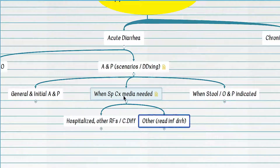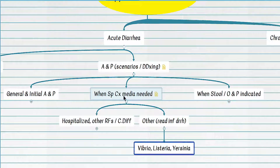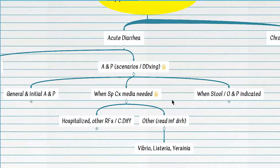Other conditions requiring special culture media include pathogens such as Vibrio, Listeria, and Yersinia — any diarrheal pathogen not included in routine stool culture. Routine stool culture includes Salmonella, Shigella, and Campylobacter jejuni. For example, a patient with symptoms of pseudo-appendicitis suggesting Yersinia enterocolitica needs a special culture. Similarly, if diarrhea occurs in immunocompromised patients or extremes of age, Listeria should be considered and special culture ordered.